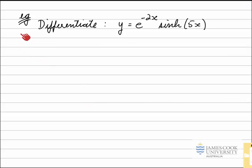In this example, we've been asked to differentiate this function y equals e to the negative 2x times the sinh of 5x. I notice that this is a product of two functions.